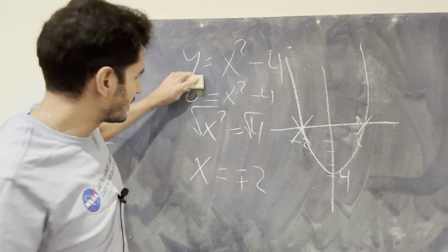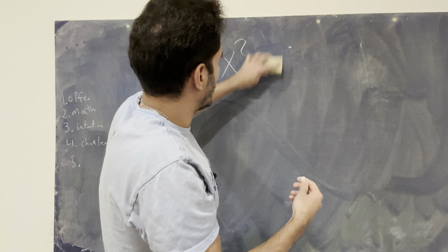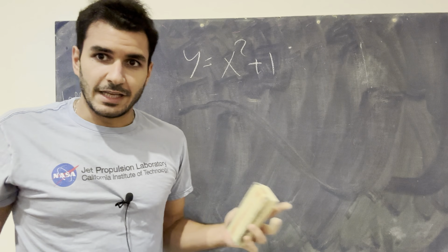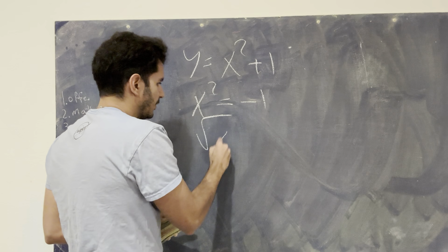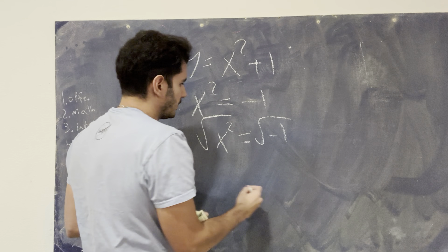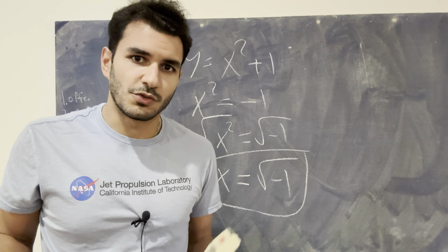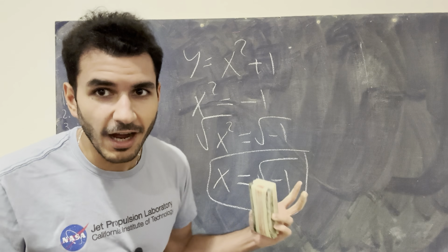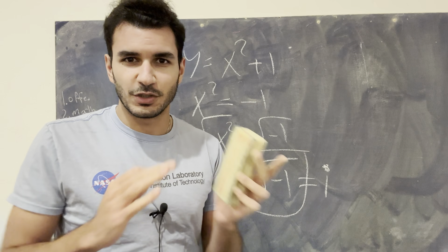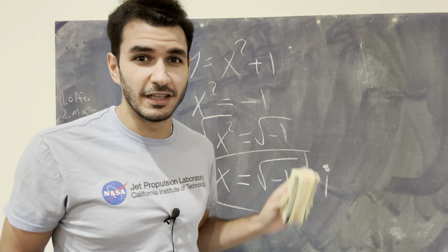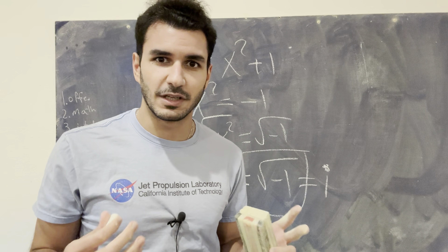Then something terrifying happens — you're faced with an equation that does not look like that. You're handed one that says x squared plus 1, and you start freaking out because you try to do the same thing: x squared equals minus 1. You take the square root of both sides and you get x equals the square root of minus 1. And like, what does that even mean? You're basically just told, 'oh, that is i,' and then going forward you know that i is the square root of negative 1. Everyone claps and moves on and no one understands what the hell i is.